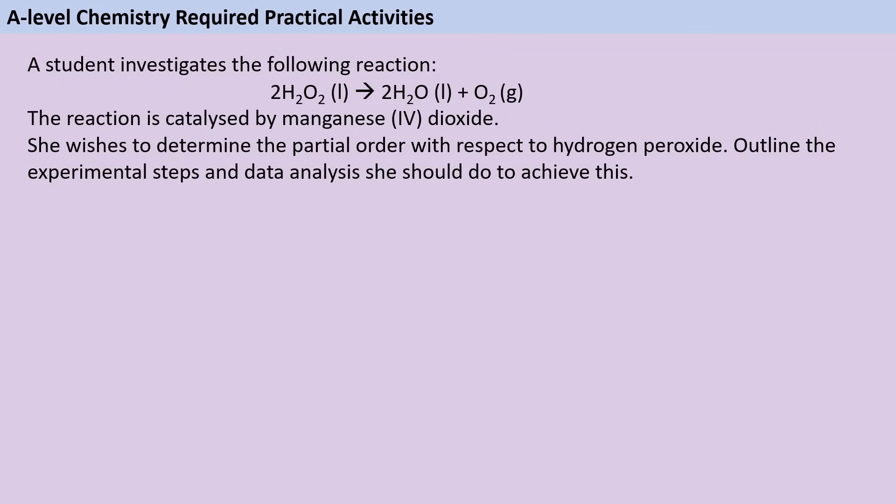This question doesn't actually make any reference to the fact that it's about continuous monitoring. It doesn't tell you that explicitly, but it's obviously about rates of reaction because we need rates to deduce partial orders. The clue here is that we've got a gas being produced, so we're going to use a gas syringe to collect the gas over the course of the reaction.